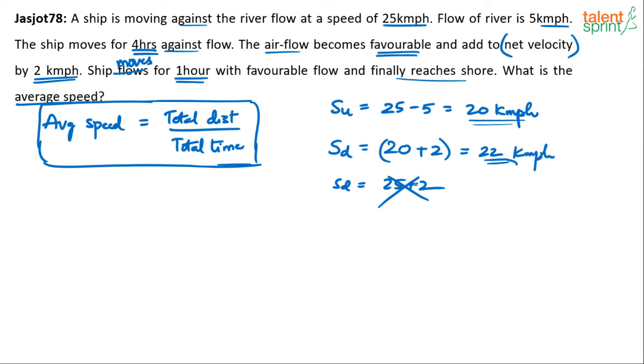Don't take 25 plus 2. It's not the downstream. It's not that the ship is going downstream. Strictly speaking, I should not be writing SD also. It's not downstream. It's with favorable flow. SD would be downstream speed will be 25 plus 5 actually. But we are not looking at the downstream speed here. It's about upstream only. But the flow became favorable.